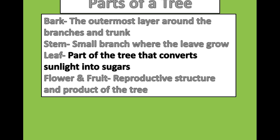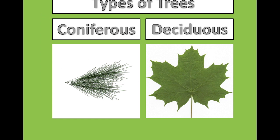Today we will be using leaves to identify the species of tree. There are two main types of trees: coniferous and deciduous. Coniferous trees, like pines and firs, have specialized leaves or needles that remain on the tree year-round. Deciduous trees lose their leaves every year in Ohio in the fall.